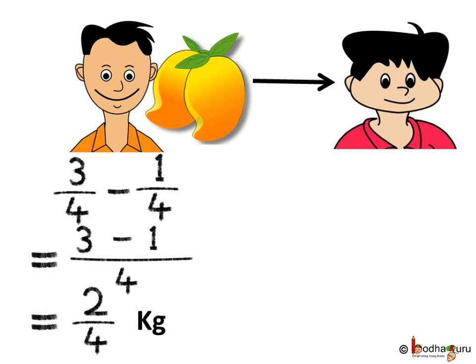As we saw in the previous example, when the fractions are like fractions and the denominators are the same, we can do the subtraction of numerators directly. So, to do three by four minus one by four, we simply subtract the numerators: three minus one, which is two. So, the answer is two by four.